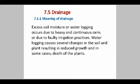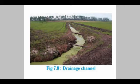Water logging causes several changes in the soil and planting results in the reduced growth of crops, and in some cases the death of plants may be faced. Proper drainage is the removal of excess gravitational water from the soil by artificial techniques in crop production. In drainage, the provision of a suitable method for the removal of excess irrigation or rainfall water from the field area facilitates favorable moisture conditions for the growth of plants, and it should be removed at certain periods of time.